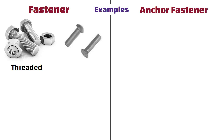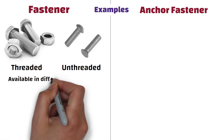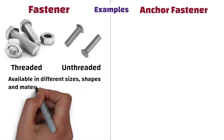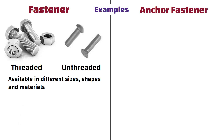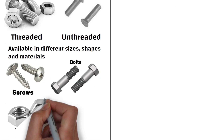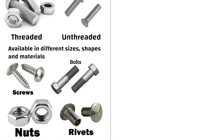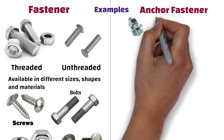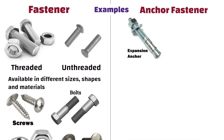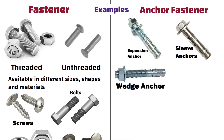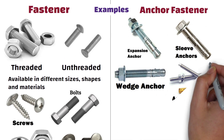Fasteners can be threaded or unthreaded and they are available in different sizes, shapes and materials. Common examples of fasteners include screws, bolts, nuts and rivets. Whereas common types of anchor fasteners include expansion anchors, sleeve anchors, wedge anchors and adhesive anchors.